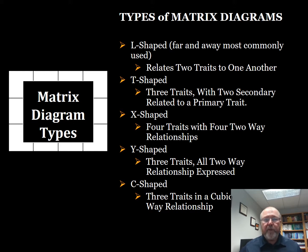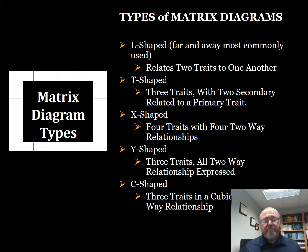We have a T-shaped matrix — that involves three factors, A, B, and C, where each factor has some number of elements. A might have five elements, B six elements, and C might have three elements. We're able to find relationships between A with B and C with B, but not the other relationship. You'll see that when I show you what the matrix looks like.